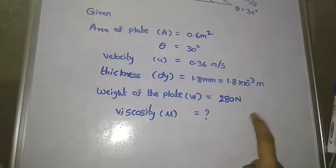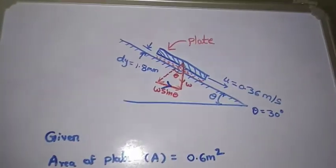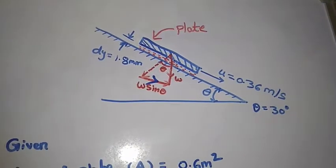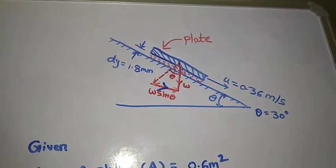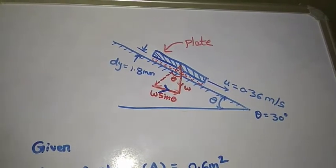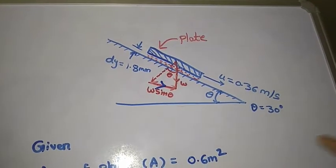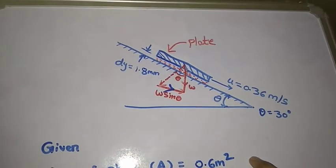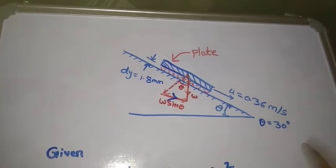First of all, we would like to understand the diagram. In our previous video, we discussed a problem with parallel plates, but here they are giving some angle between them. This is the same problem but the difference is the angle given, θ = 30°.